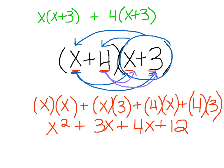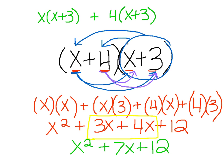We get x squared plus 3x plus 4x plus 12. Both 3x and 4x have the same variable, so we can add those terms together and we get x squared plus 7x plus 12 as our final answer. You always want your answer simplified as much as possible. Remember, we cannot combine 7x with x squared because x and x squared are not the same — x squared is x times x.